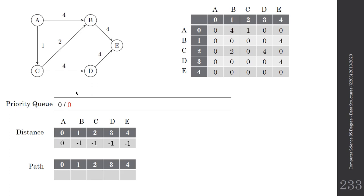We check the neighboring vertices of A, which are B and C. The distance to B is currently minus one, so we compute it as distance to A plus 4, which equals 4. The path for B comes from A, which is index zero. We enqueue vertex number 1 with distance 4 in the priority queue.